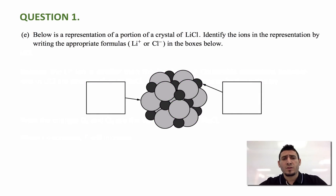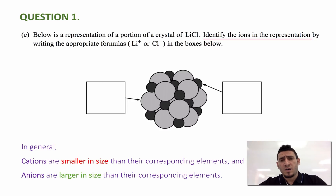Now let's move on to question E, which shows a representation of a portion of a crystal of lithium chloride and asks us to identify the ions by writing the appropriate formulas, Li⁺ or Cl⁻, in the boxes. In general, cations are smaller in size than their corresponding neutral elements, and anions are larger. So we can expect that the smaller black spheres represent lithium ions and the larger gray spheres represent chloride ions.